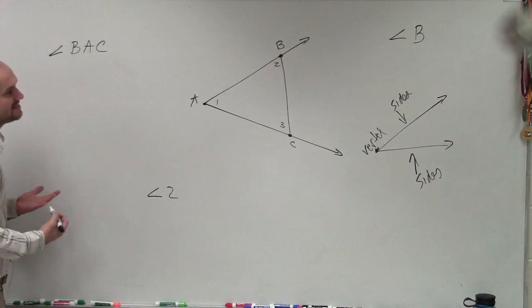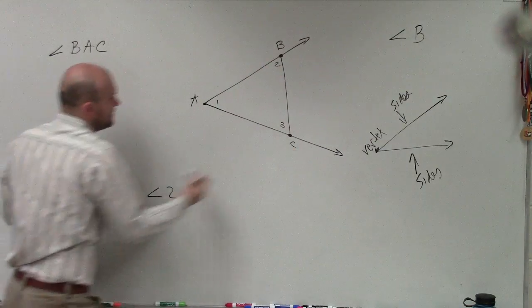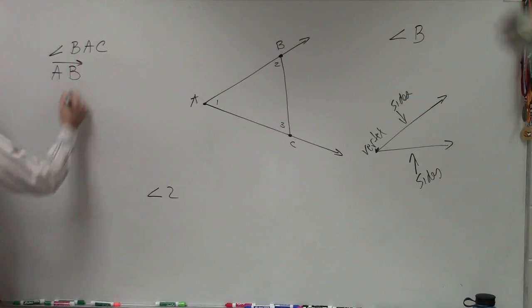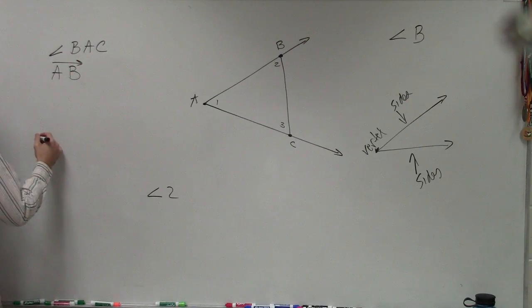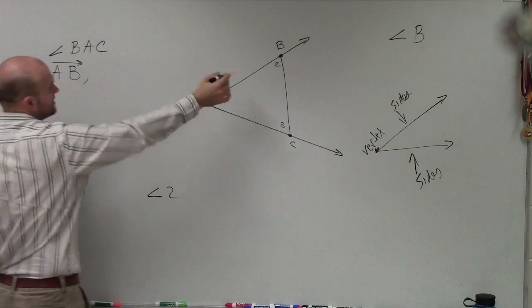So if I said, what are the sides of BAC - B to A to C? So the two side lengths are AB, and you can say BA and BAC.